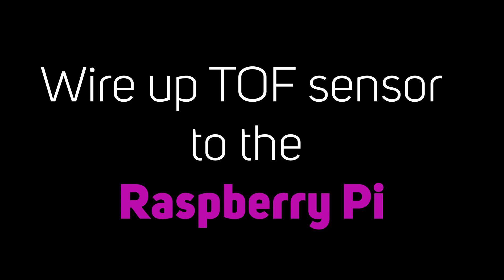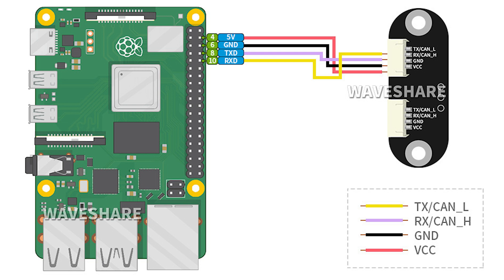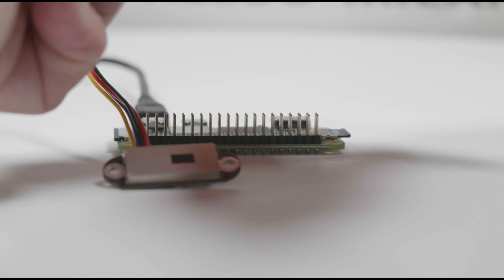Let's wire up the sensor to the Raspberry Pi. Make sure the Raspberry Pi is turned off when you do this. We don't need a breadboard — we're going to wire straight from the sensor to the Raspberry Pi. The sensor has four wires: the red wire is VCC 5 volts, the black wire is ground 0 volts, the blue wire is the transmit wire (we won't need that), and the yellow wire is the receive wire where we'll receive our distance measurements.